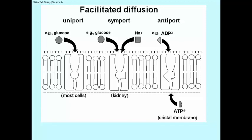Most cells have this, where glucose in kidney cells for example is co-transported with sodium ions, and the reason for that will become clear in a second. And then antiport, which we've actually seen in the cristal membrane of the mitochondrion. We exchange ADP with three negative charges for ATP with four negative charges. So the ATP leaves the matrix of the mitochondrion while ADP enters it.